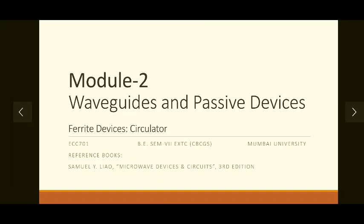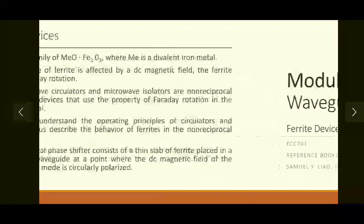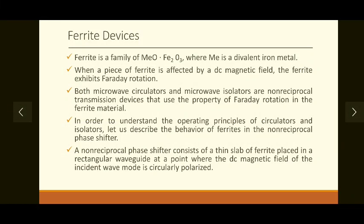Hello everyone. Today in this video we are going to start with a next type of passive devices called ferrite devices. Ferrite devices are a type of iron metal. When they are affected by a DC magnetic field, they exhibit the Faraday rotation. Whenever we apply a DC magnetic field to a ferrite type of metal, it exhibits Faraday rotation.